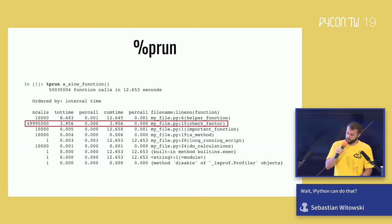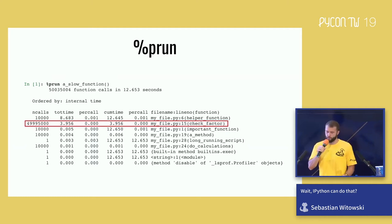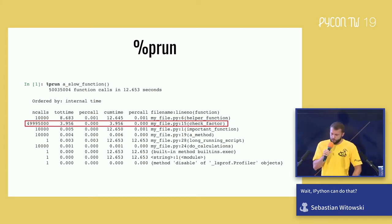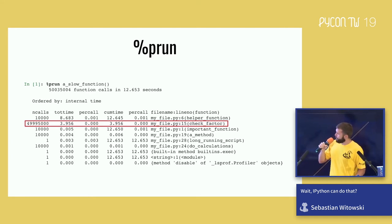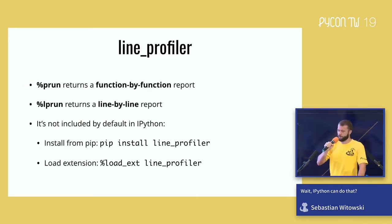Once we know our code is slow, we probably want to understand exactly why. We can use the `%prun` magic function, which shows a nice overview of the total time spent calling each function, how many times each function was called, and where it's located. Here we can see our slow function is running for 12 seconds performing 50 million operations, and most of the time is spent in a function called `check_factor` in a file called `my_file.py`. Now we can go there and check what's wrong and maybe make it faster.